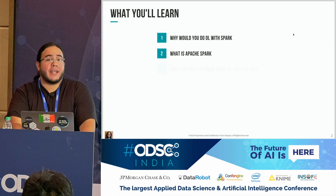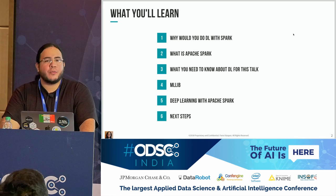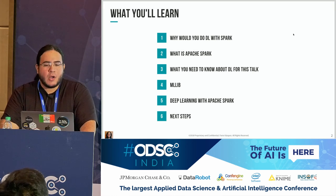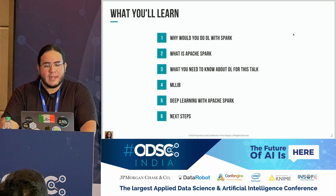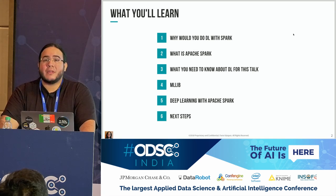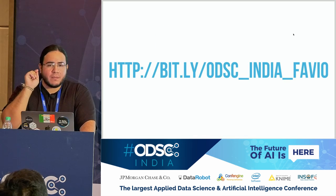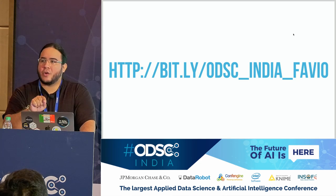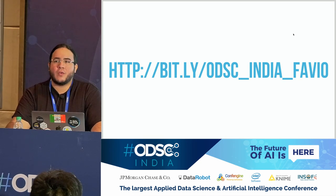So what will you learn today? First, why would you be doing deep learning with Apache Spark? What is Apache Spark, if you don't know it. What you need to know about deep learning for this talk — it's almost nothing. MLlib, the library for doing machine learning with Spark. Deep learning with Apache Spark. And next steps. This is the link to the GitHub repository where every code is in there. If you want to follow along, take a photo or copy it right now.